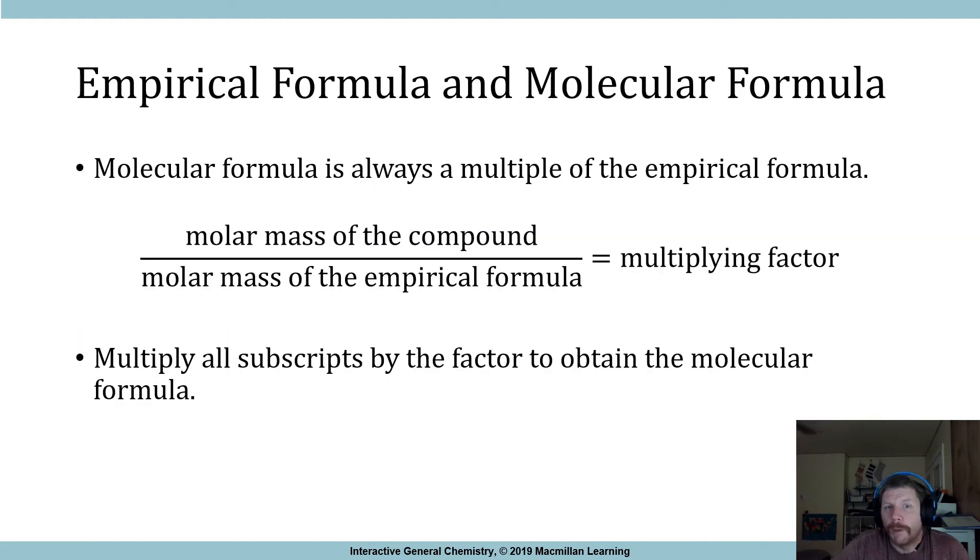Their makeup is basically the same with respect to numbers of carbons to hydrogens and so forth. What sets them apart from one another, however, is the actual number of carbons and hydrogens in each respective molecule. There's two carbons in acetylene, there's two hydrogens in acetylene. There's six carbons and hydrogens, respectively, in benzene.